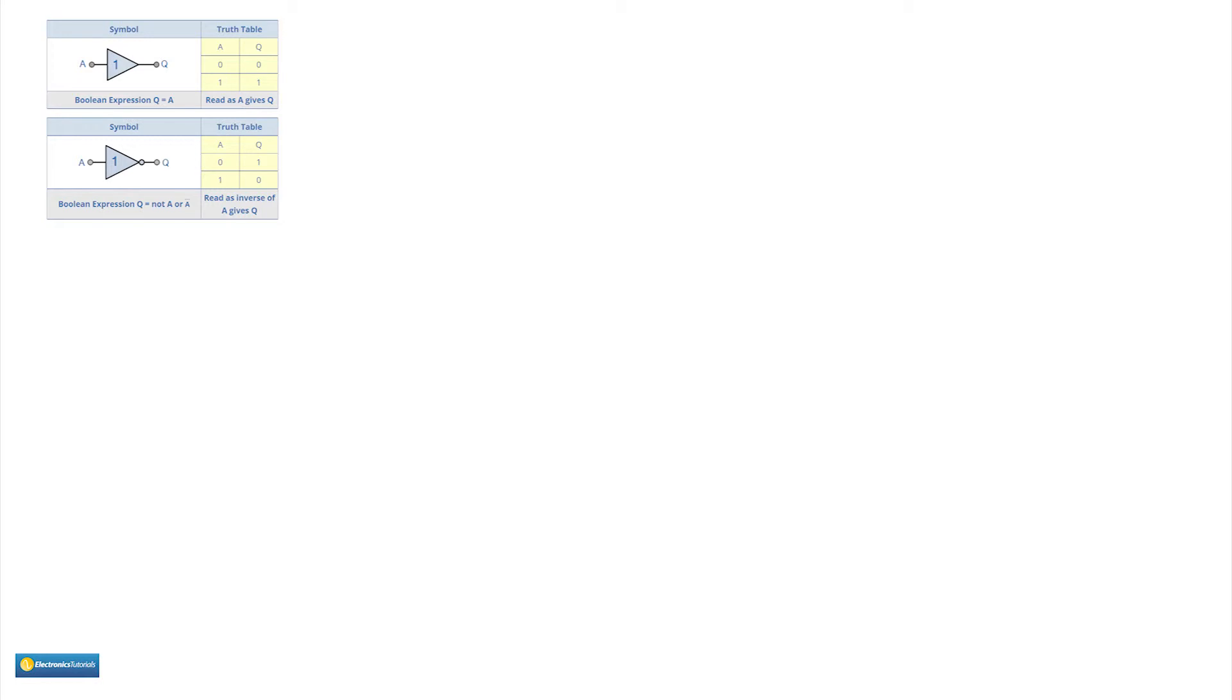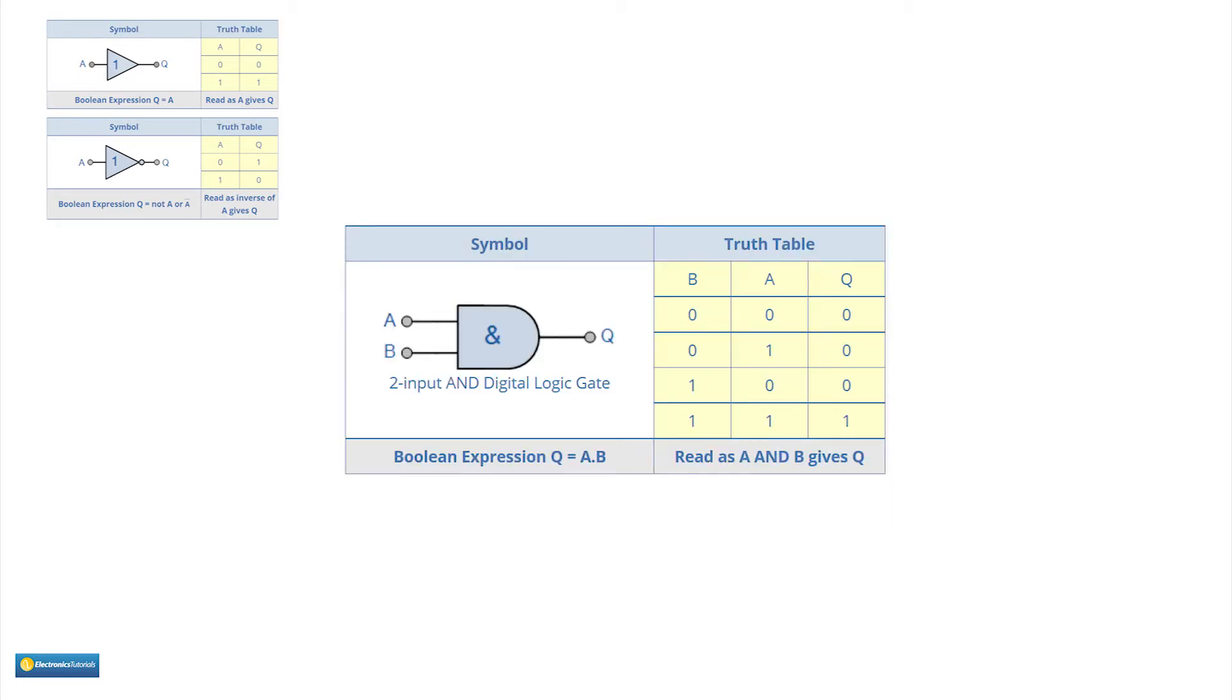Let's now look at two input devices. This is an AND gate. The truth table for the AND gate is shown here. Notice that output is 1, high or true, only if A and B are high. Hence the name.